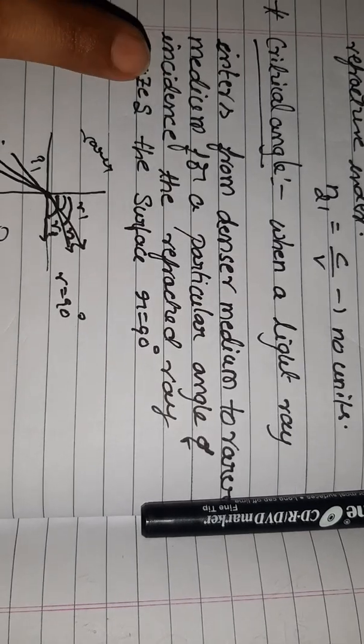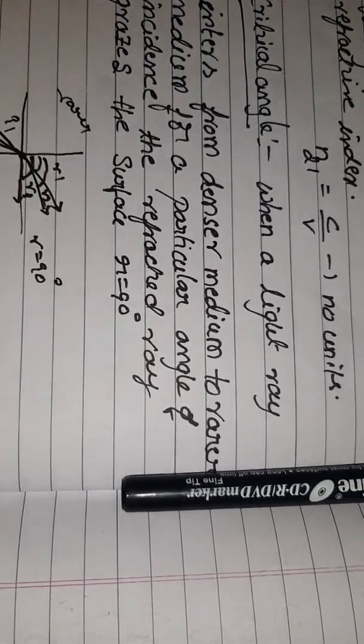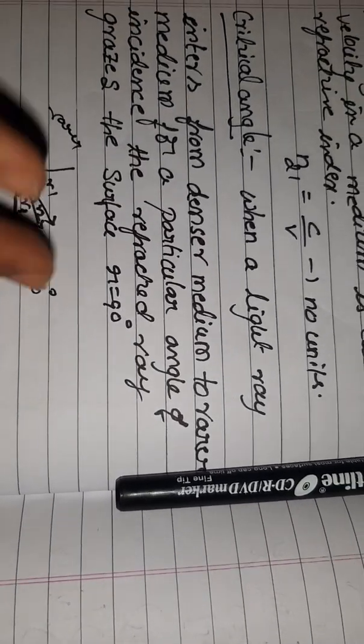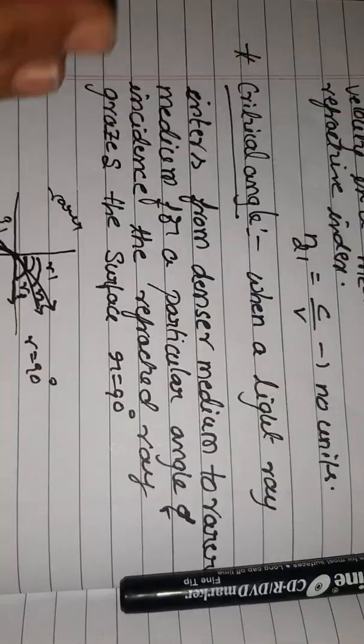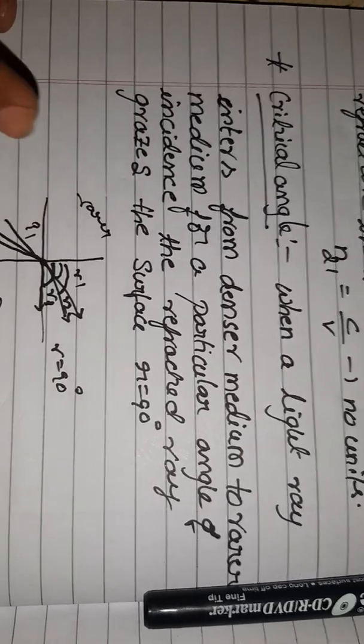When light travels from denser medium to rarer medium, it bends away from the normal. For example, when doing angle of incidence from a denser to rarer medium, the light goes away from the normal.